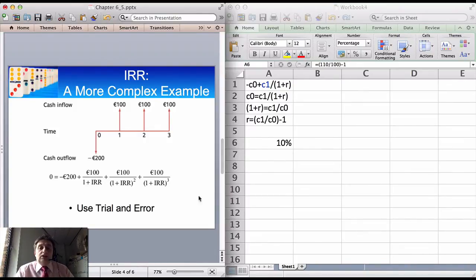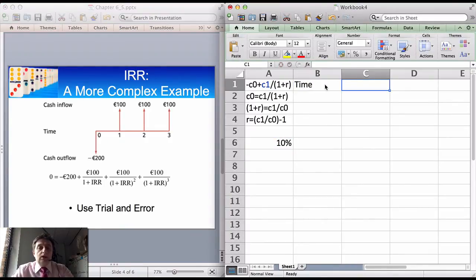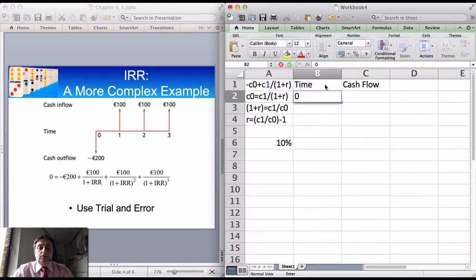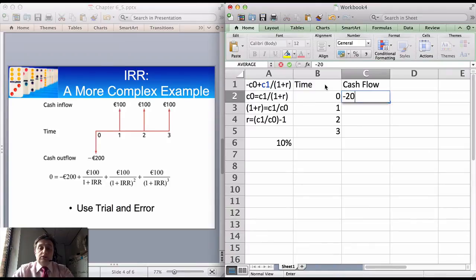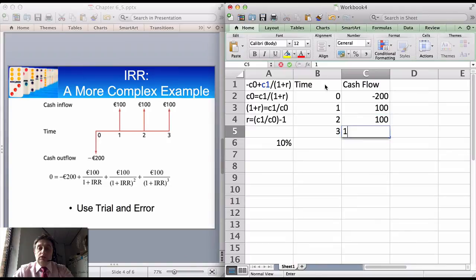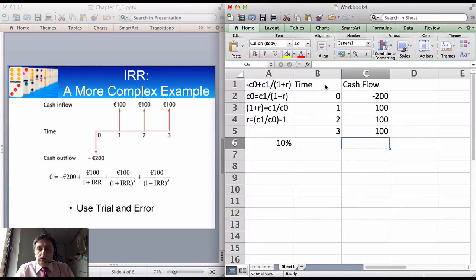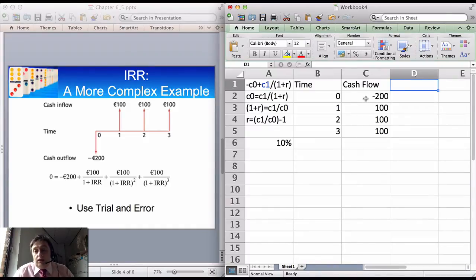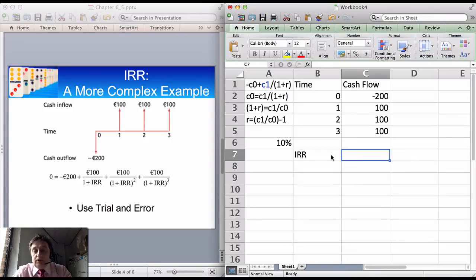Let's just do this. We can put time here and the cash flow here. We start off at zero because that's when the outflow takes place, and the outflow is minus 200, and then the inflows are 100 every year. We're wanting to find the return on this investment, or the internal rate of return. We want to find the value of R that gives us the NPV equal to zero. Let's start off with a value of 40%, something crazy.